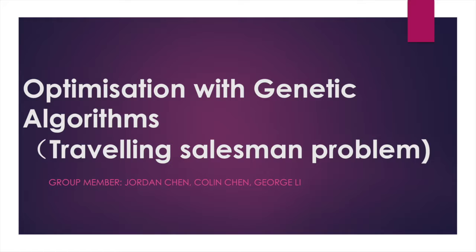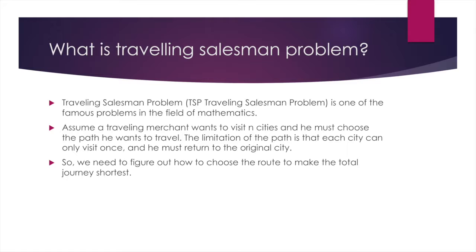So what is TSP, traveling salesman problem? It is one of the famous problems in the field of mathematics. We assume a traveling merchant wants to visit cities and he must choose the path he wants to travel. The limitation of the path is that each city can only be visited once and he must return to the original city. So we need to figure out how to choose the routes to make the total journey shortest.